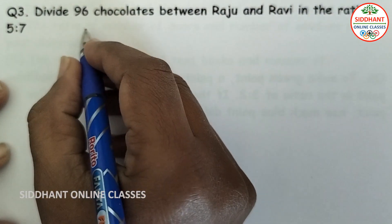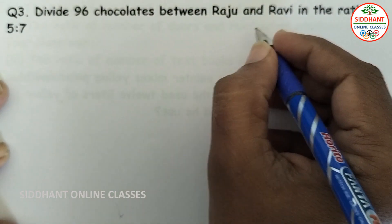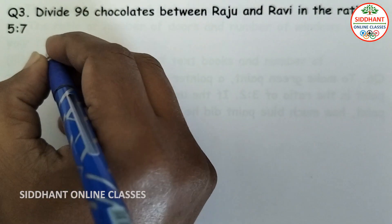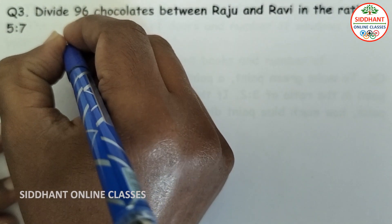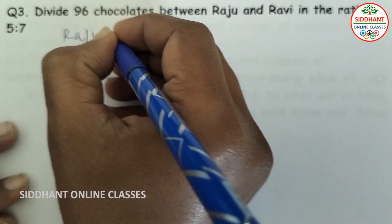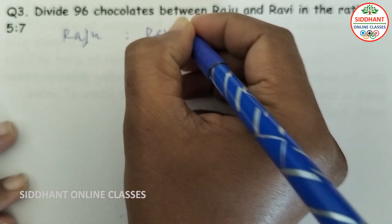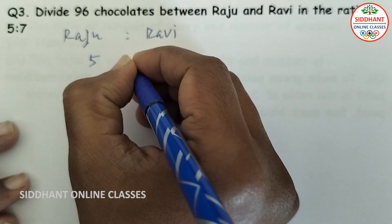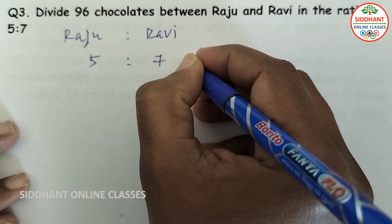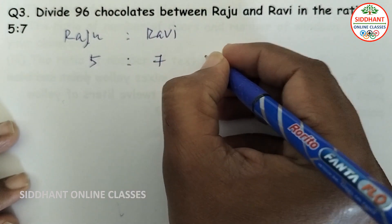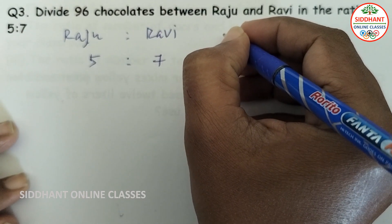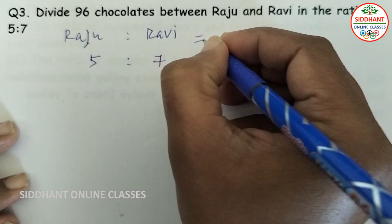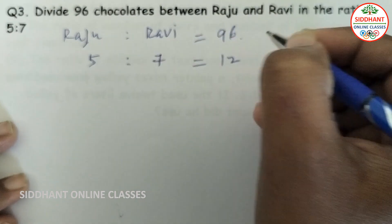Question number 3: Divide 96 chocolates between Raju and Ravi in the ratio 5 is to 7. The chocolates are in ratio 5 is to 7, meaning 5 plus 7 equals 12 total parts, and the total chocolates are 96.